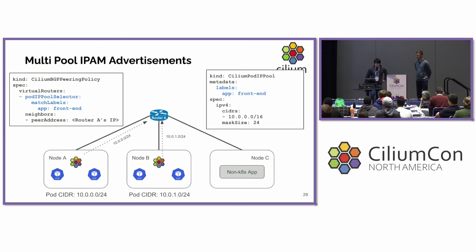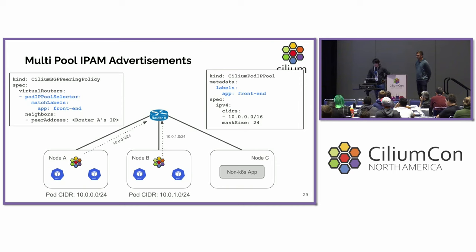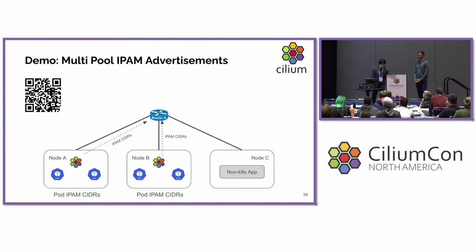The last BGP use case we want to introduce is integration with multi-pool IPAM. Multi-pool IPAM is a feature introduced in the latest release of Cilium that allows you to define multiple pools of pod CIDRs within the cluster. Cilium BGP control plane can now selectively advertise pod CIDRs allocated from a specific pool by selecting the CiliumPodIPPool resources by label.